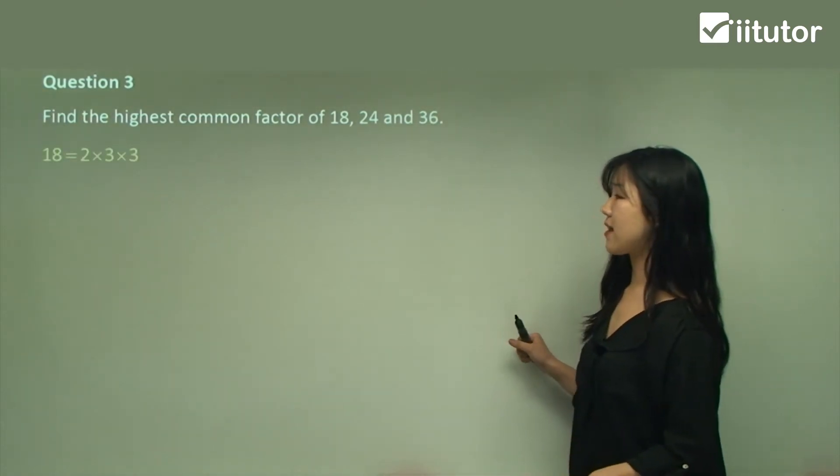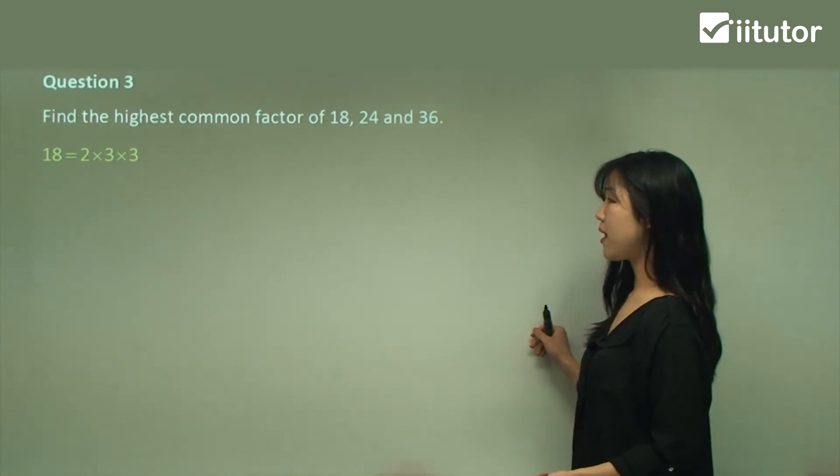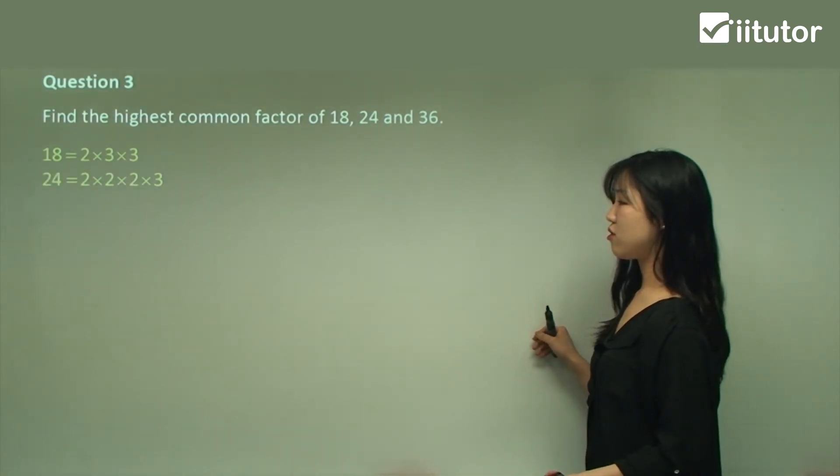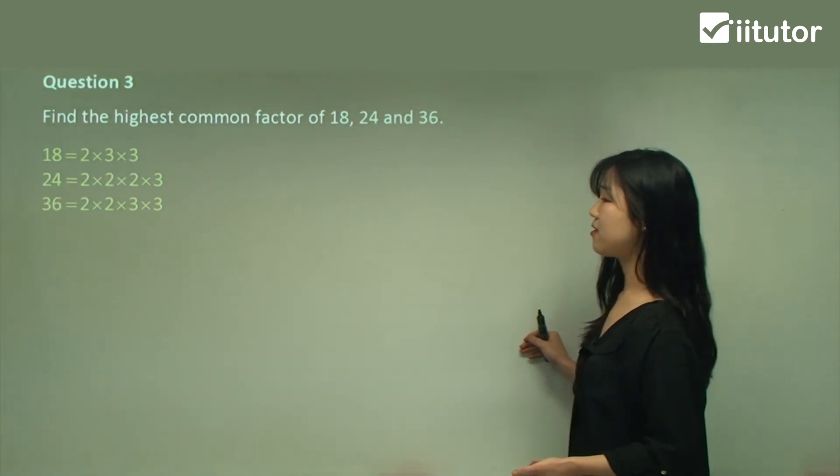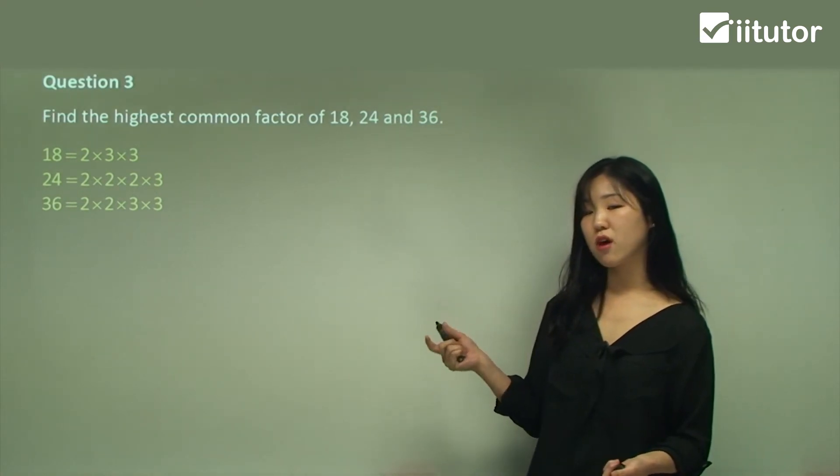First, let's put the prime factors of 18, which is 2 times 3 times 3. 24 is 2 times 2 times 2 times 3. And 36 is 2 times 2 times 3 times 3. Now we have to find what's common for all 3.